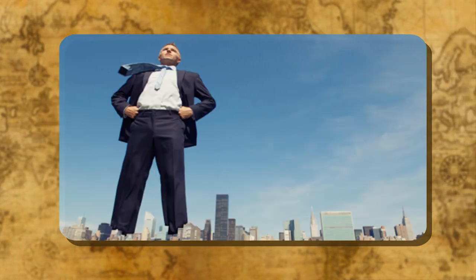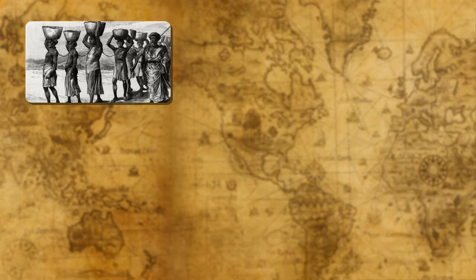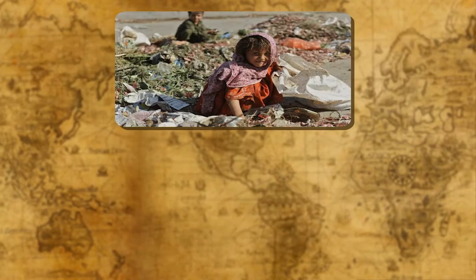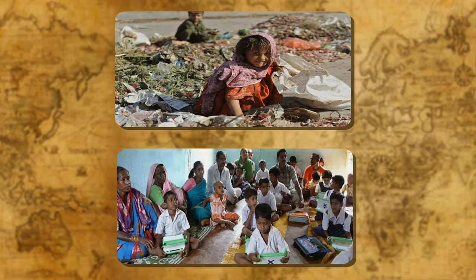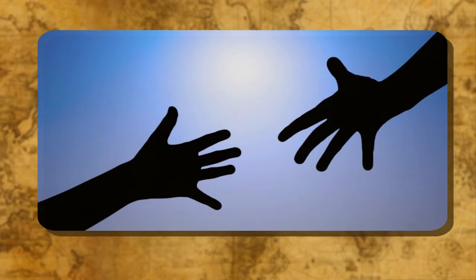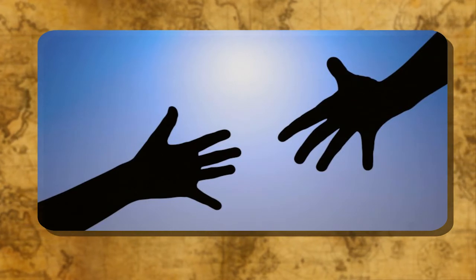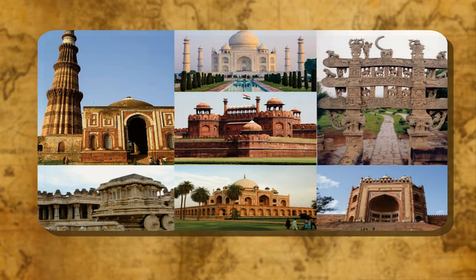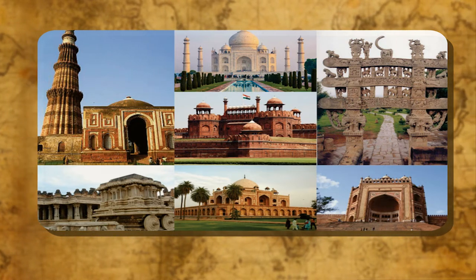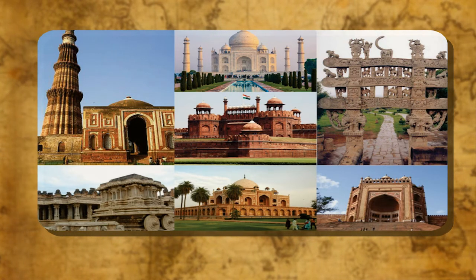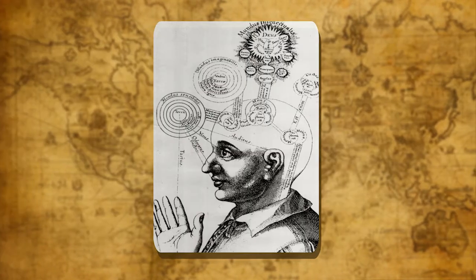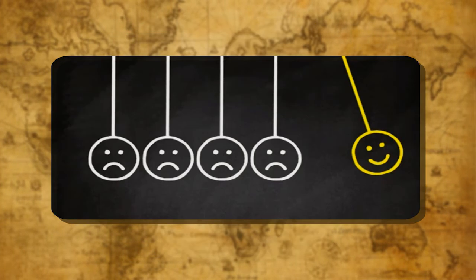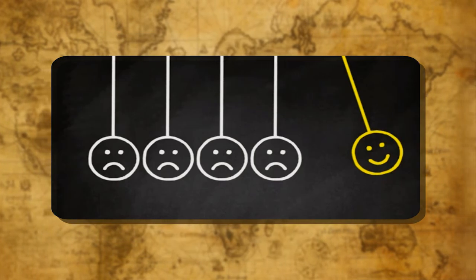It teaches a big lesson to man that slavery, racial discrimination, hunger, poverty, illiteracy, etc. are the evils of our society and we need to eradicate them. History helps us to remember our past glory and keeps it preserved. We can realize that the study of the past is so closely knit into the present that we cannot ignore it.